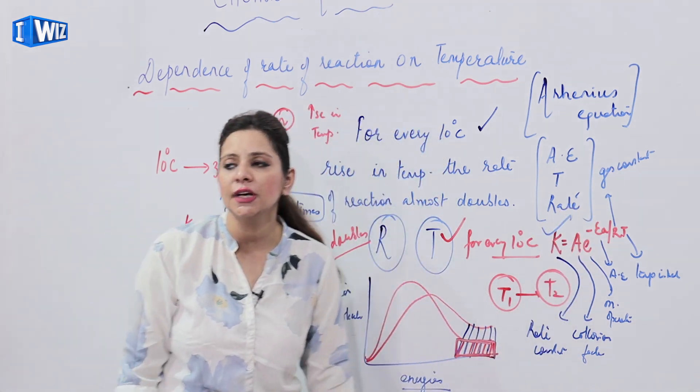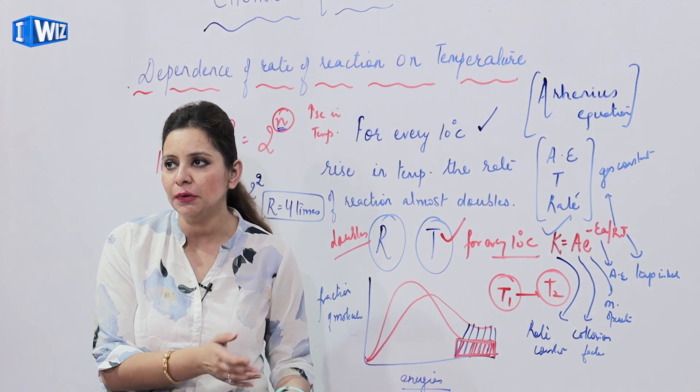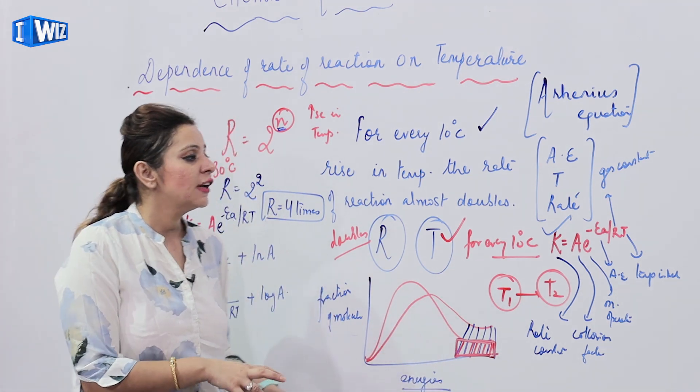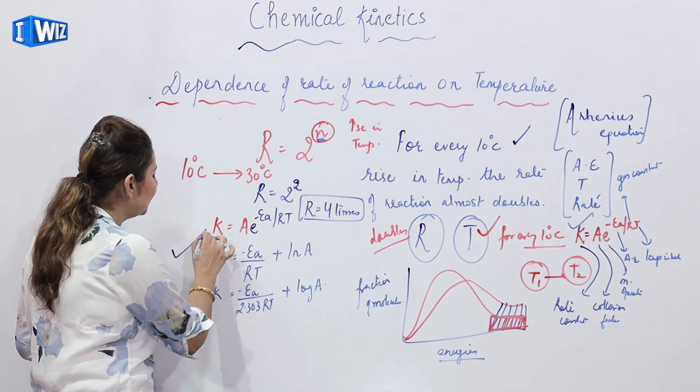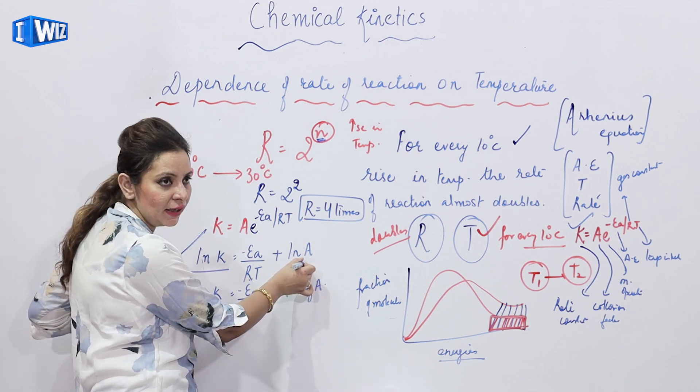You can use this expression in order to solve for the asked variable, unknown variable. We can take in the form of log also. If we do integrate it and we have a natural log, then it becomes ln K is equal to minus EA upon RT plus ln A.